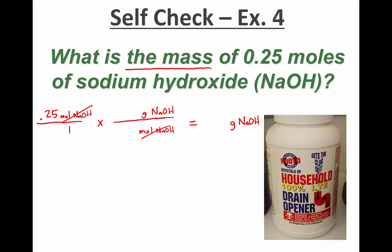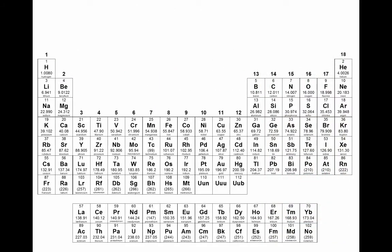Next, I put in a conversion factor with moles NaOH on the bottom, and that's so that they will cancel. And I put grams NaOH on the top. And whenever I want to find the number of grams per mole of substance, I look that up on the periodic table. For this one, I'm going to have to add up the molar mass of NaOH.